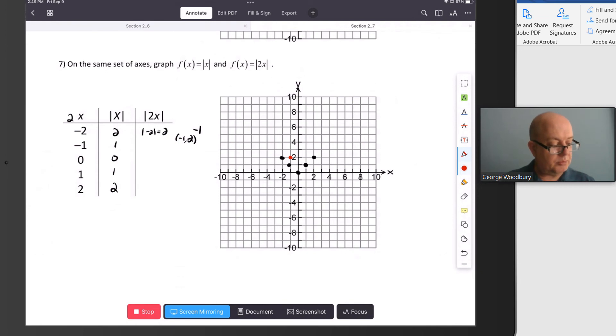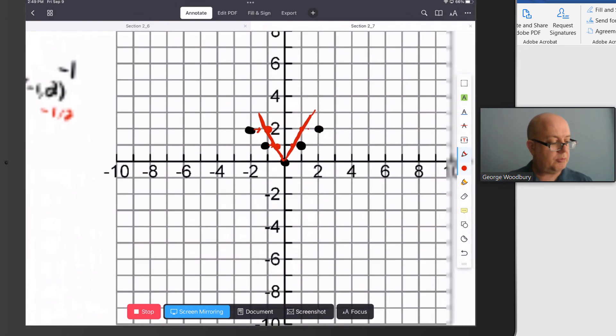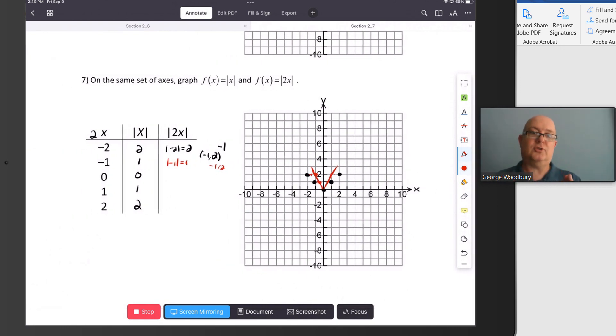The next value we would plug in would be negative 1 half. 2 times negative 1 half is negative 1, the absolute value is 1. So 1 half. And what's really happening here is these points, let me blow this up for just a minute, are being pushed in. We're also going to get 1 here and here. So if I blow this back up, it's being shrunken by a factor of 1 half. Those points are half as far away from the y-axis as the original function was.